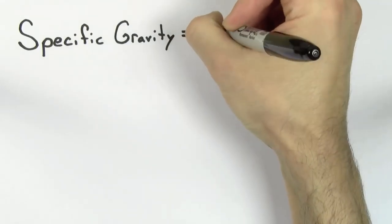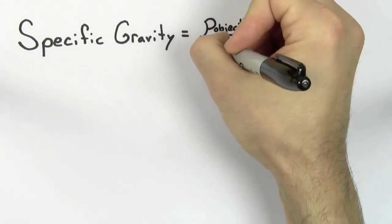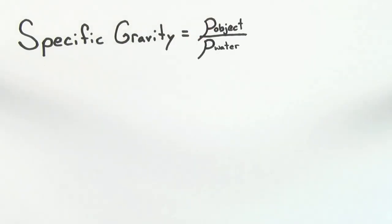Usually, when people are referring to the specific gravity, they're referring to the density of the object divided by the density of water. But sometimes it's useful to define the specific gravity with respect to a liquid that's different from water.